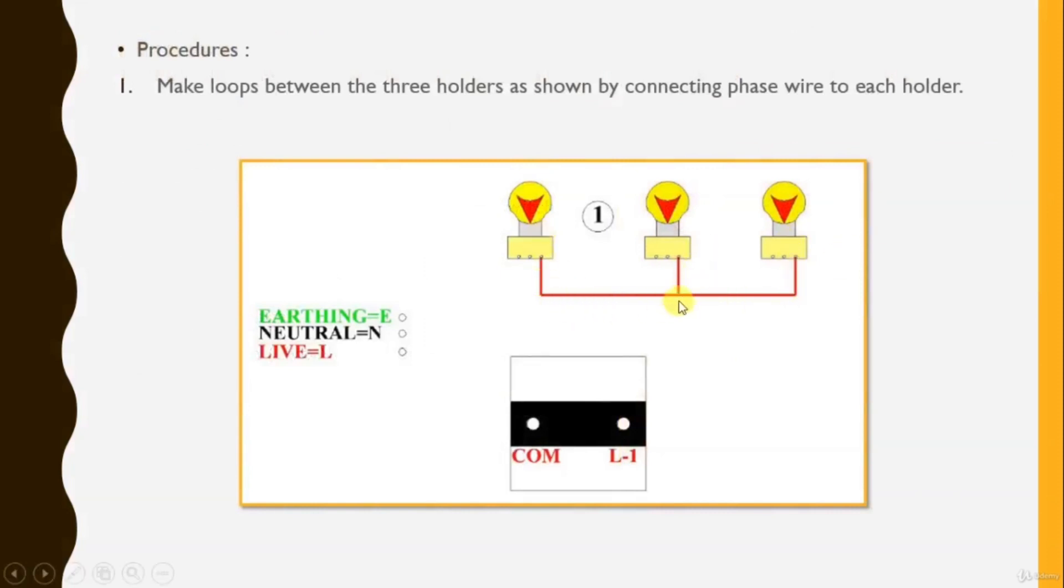Well, since you need to energize the lights at the same time, make loops between the three holders as shown. As our dealing, we start with phase wire.